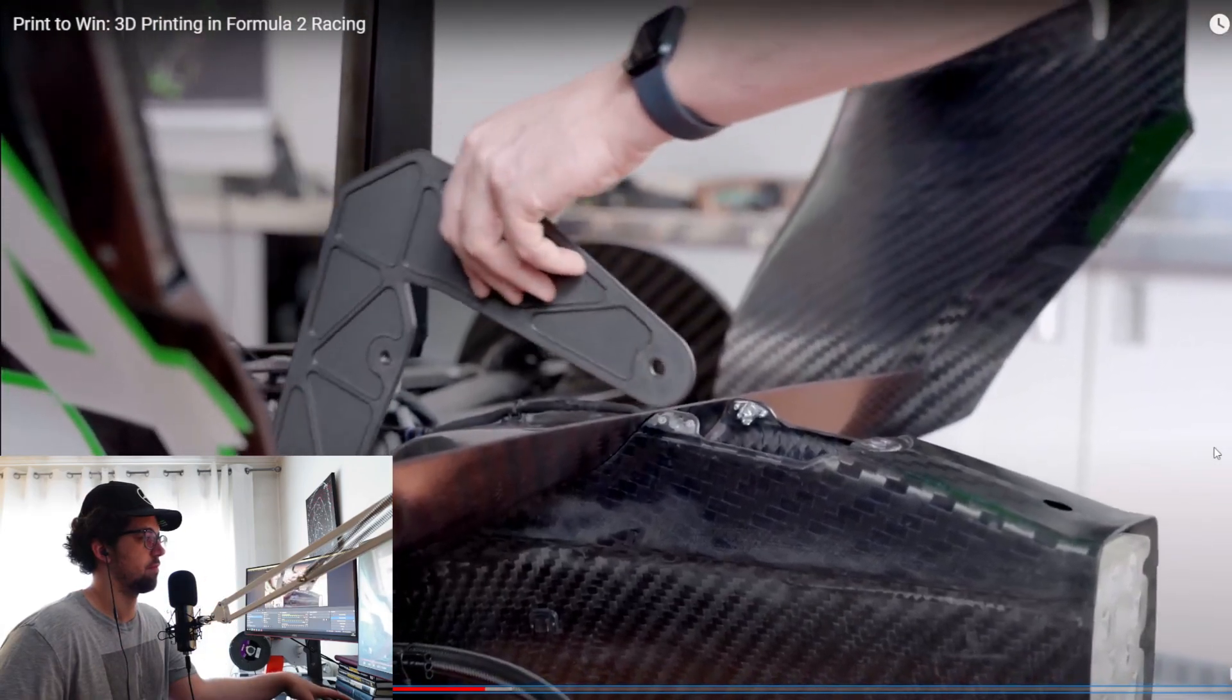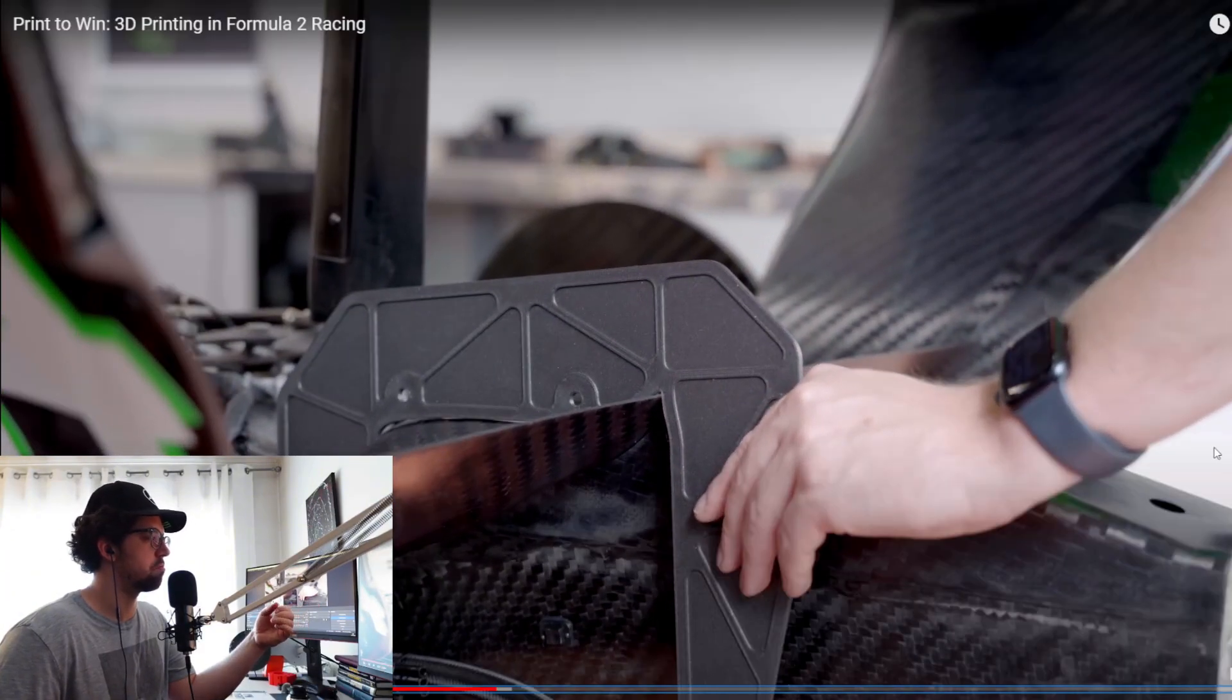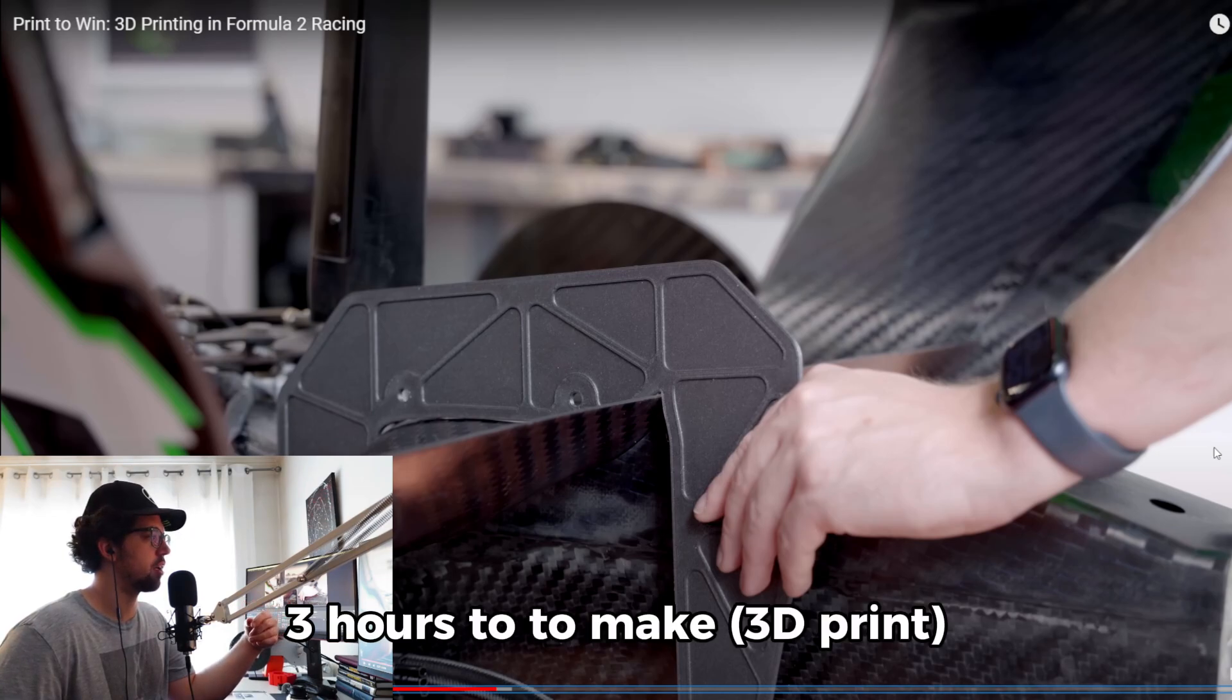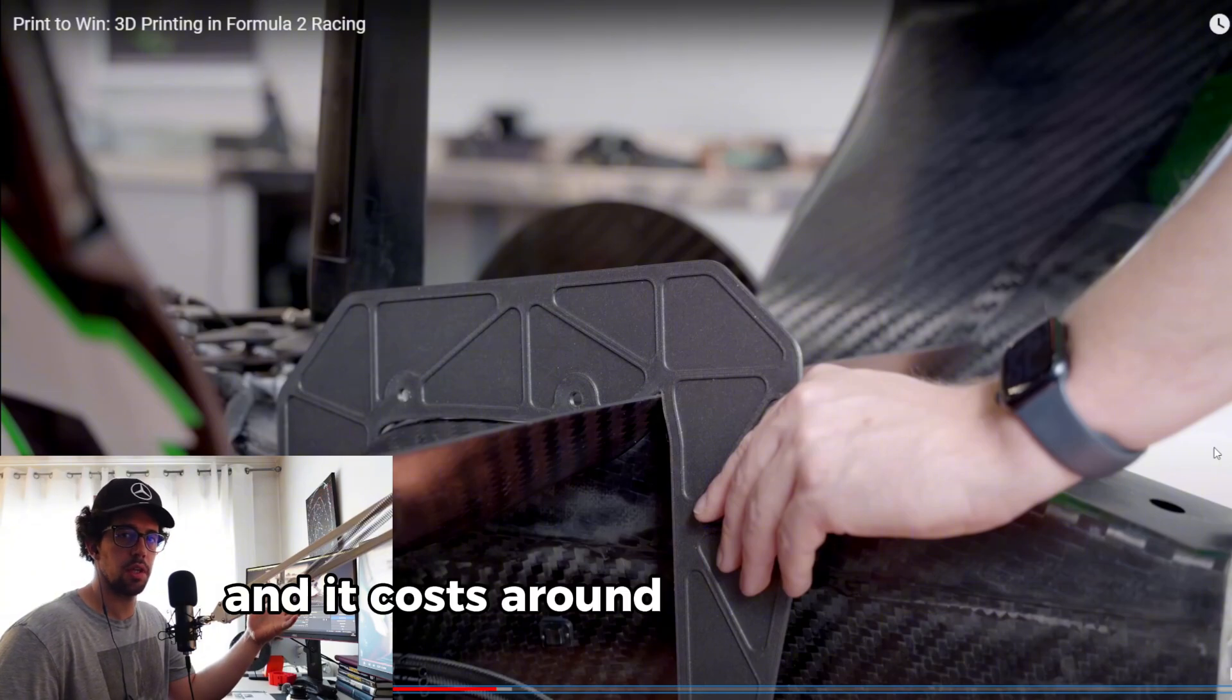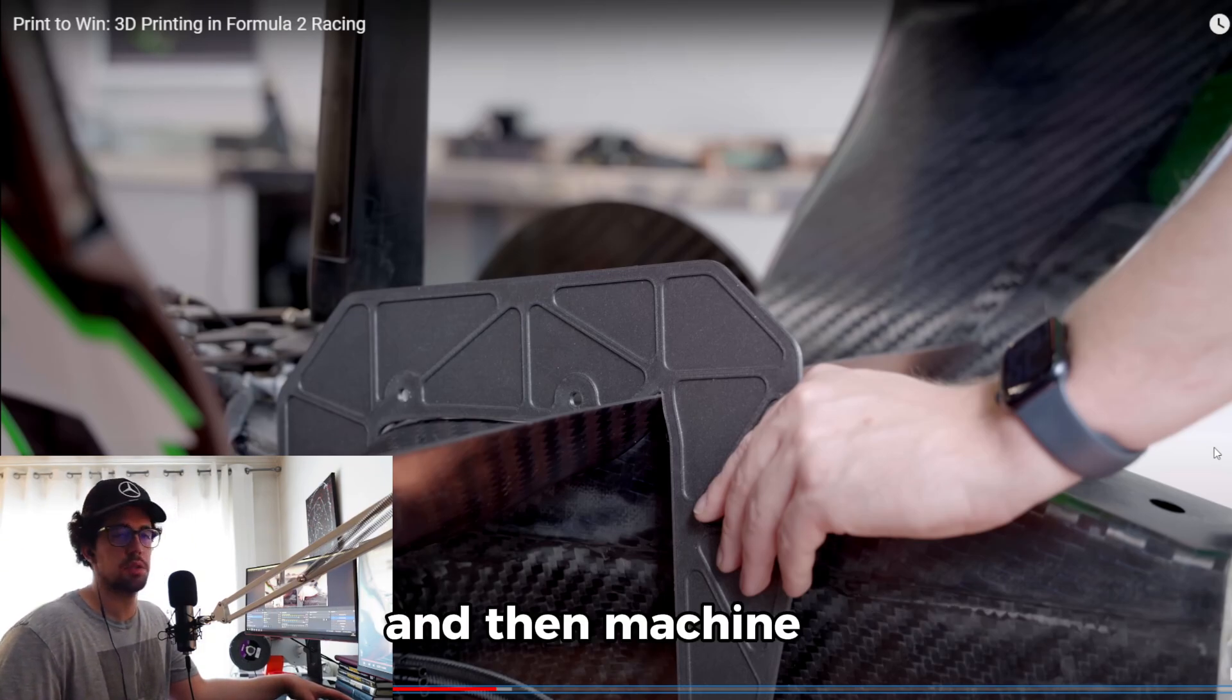For example there is this part, this is the part that we machine later in aluminium. This part probably will take about three hours to make and it costs around one euro. If the part is not right, you can print it again and find the best design possible and then machine it.